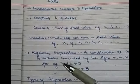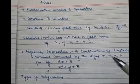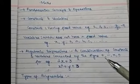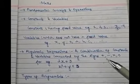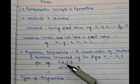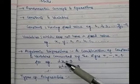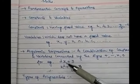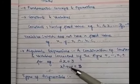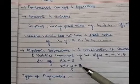The next topic is algebraic expression. An algebraic expression is a combination of constants and variables connected by the signs plus, minus, multiply, or divide. For example, 2x plus 3 — we have constant terms 2 and 3, and variable x, connected with a plus sign. That's a simple algebraic expression.